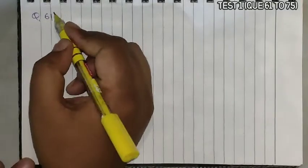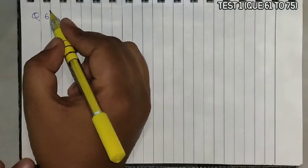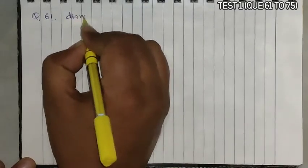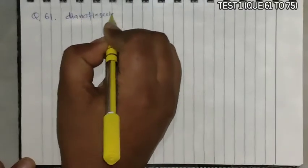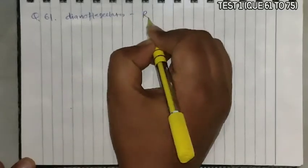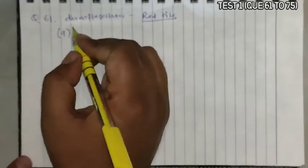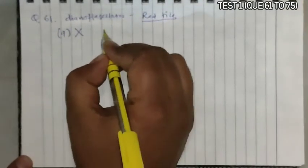Question 61: Which of the following is a dinoflagellate responsible for red tide? Red tide is a particular phenomenon found in dinoflagellates where a reddish tide is observed. Among the options, option A is Anabaena — it is a cyanobacteria, not a dinoflagellate.